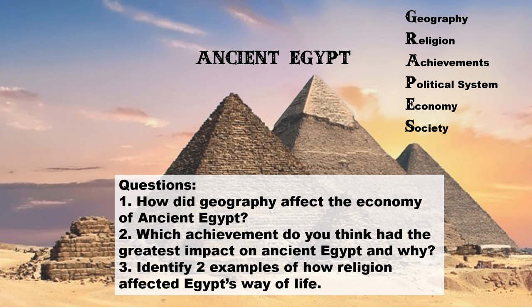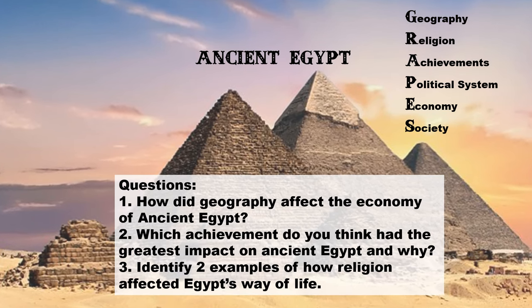Hello everyone, today's video is about ancient Egypt and we're going to very briefly look at a huge time period using the GRAPES method. If you haven't heard about that before, the G is for geography, R for religion, A for achievements, P for political system, E for economy, and S for society. By the end of this video you should be able to answer three questions: one, how did geography affect the economy of ancient Egypt? Two, which achievement do you think had the greatest impact on ancient Egypt and why? And three, identify two examples of how religion affected Egypt's way of life.